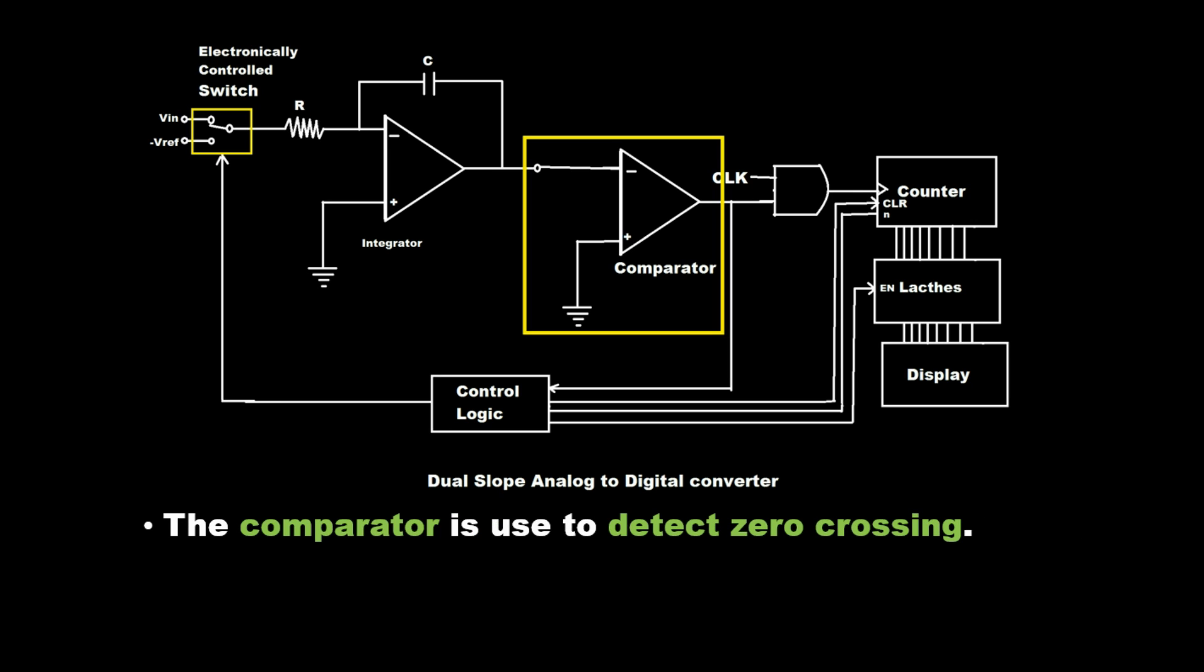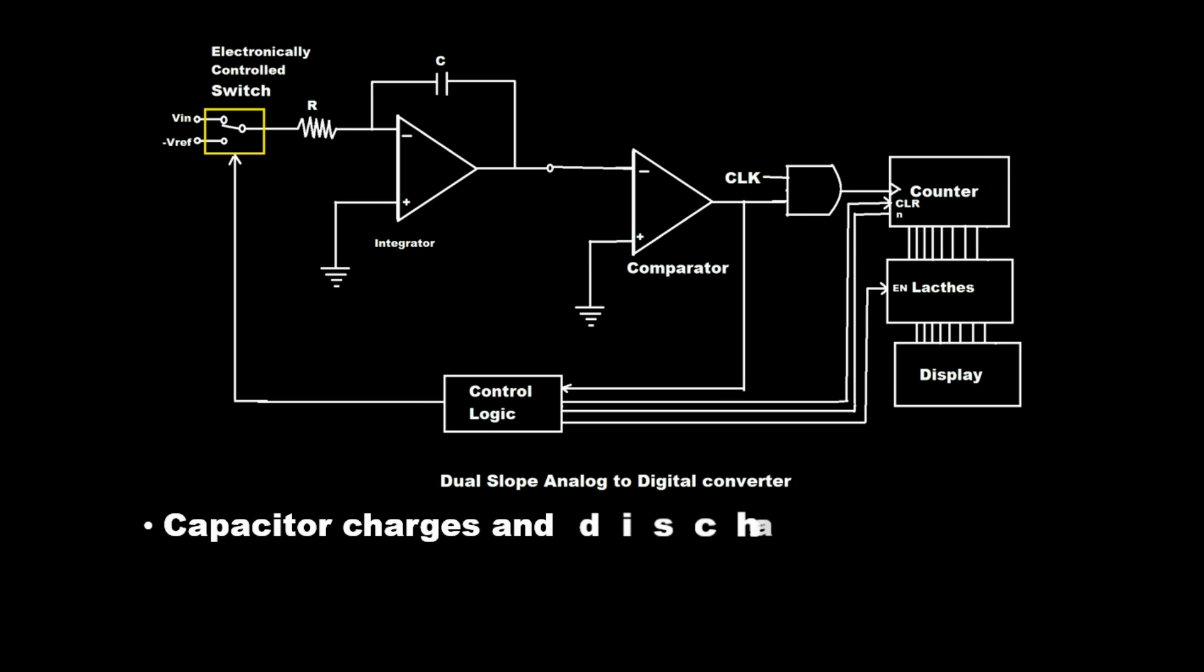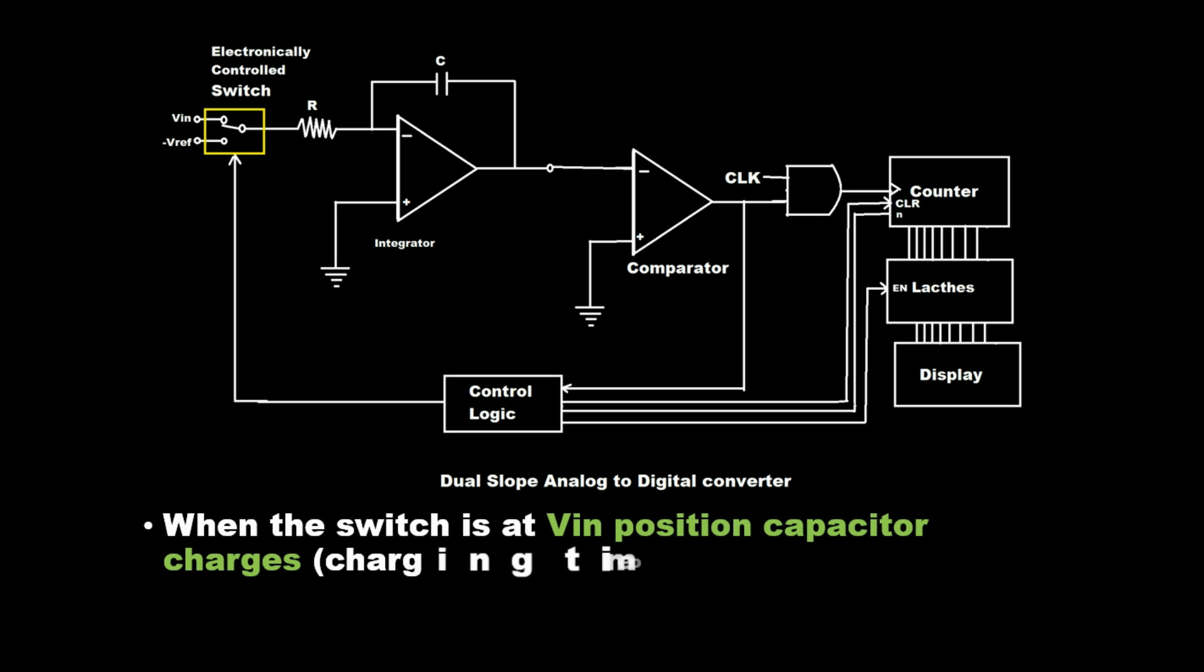The comparator is used to detect zero crossing. The capacitor charges and discharges linearly with constant slopes. When the switch is at VIN position the capacitor charges, and the charging time of the capacitor is less.